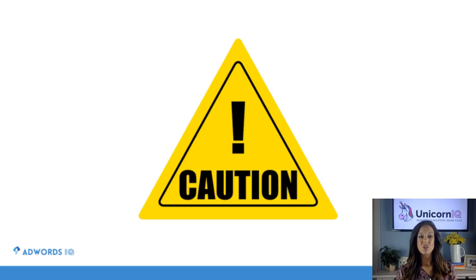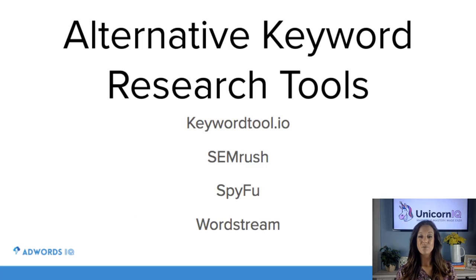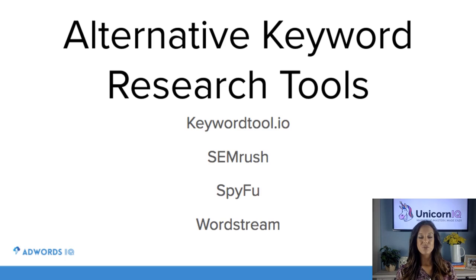Another thing you can do is use some alternative keyword research tools. I've used these four in addition to the keyword planner. There's KeywordTool.io, there's SEMrush which is a really popular one, SpyFu which is really cool — it has features where you can spy on your competitors and see what kind of AdWords activity they have going on — and of course WordStream is a great tool as well. Those are some alternative keyword research tools you can explore if you're not happy with the keyword planner.